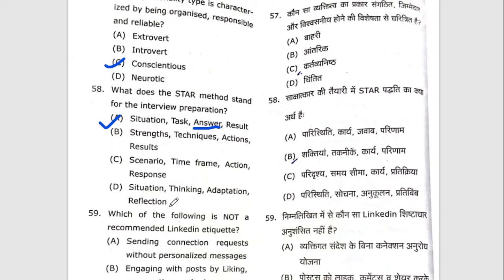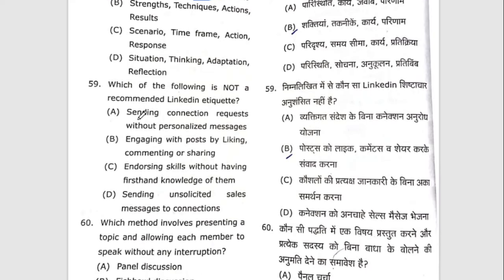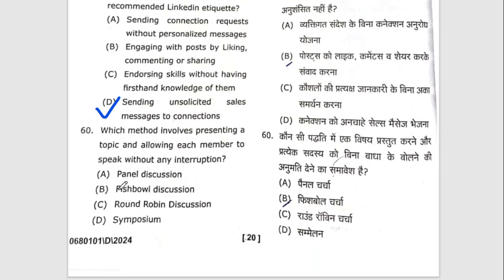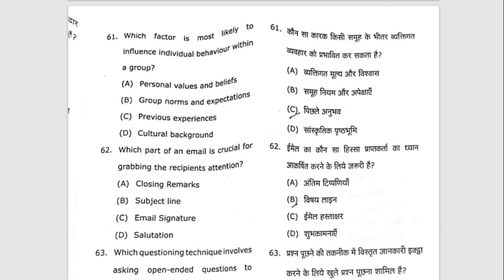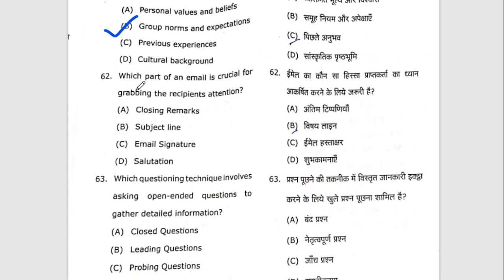Fifty-ninth question: which of the following is not a recommended LinkedIn practice? The right option is D — sending unsolicited sales messages to connections. Sixtieth question: which method involves presenting a topic and allowing each member to speak without interruption? The right option is round-robin discussion. Sixty-first question: which factor is most likely to influence individual behavior within a group? The right option is B — group norms and expectations.